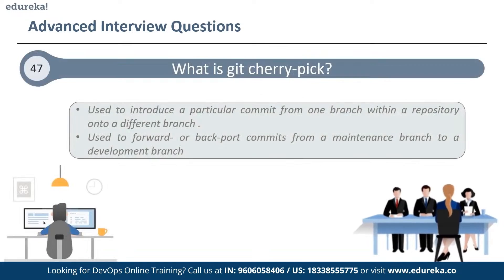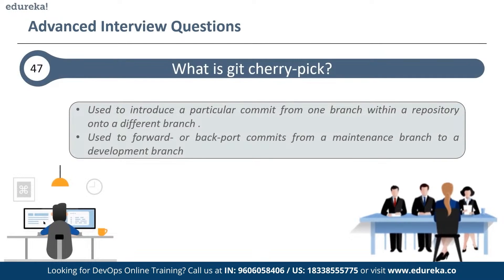The next question is: what is git cherry-pick? The git cherry-pick command is normally used to introduce a particular commit from one branch within a repository onto a different branch. Another common use is to forward- or back-port commits from a maintenance branch to a development branch. This is in contrast with merge and rebase, which normally apply many commits onto another branch. The syntax is simply: git cherry-pick <commit-hash>.